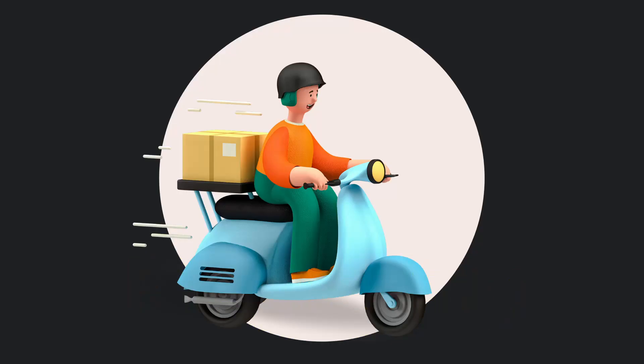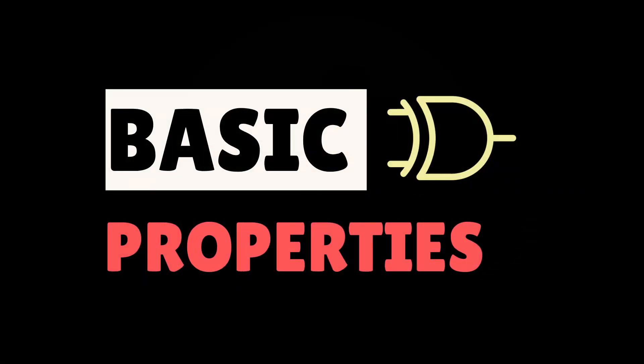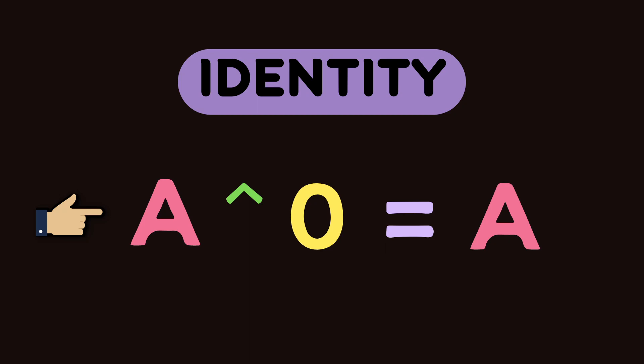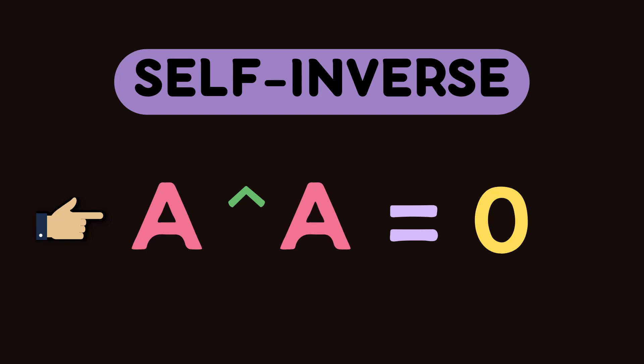So welcome back. Before going to the solution, let's understand the basic properties of XOR gate. A XOR 0 is A - any value XOR with zero is itself. A XOR A is zero - any value XOR with itself is zero.